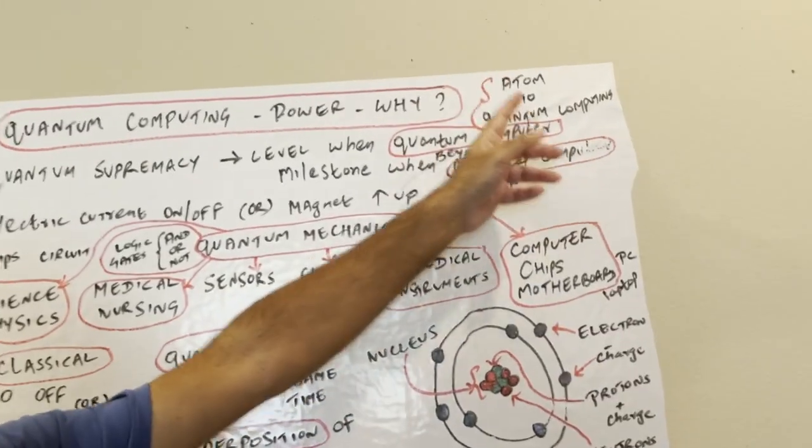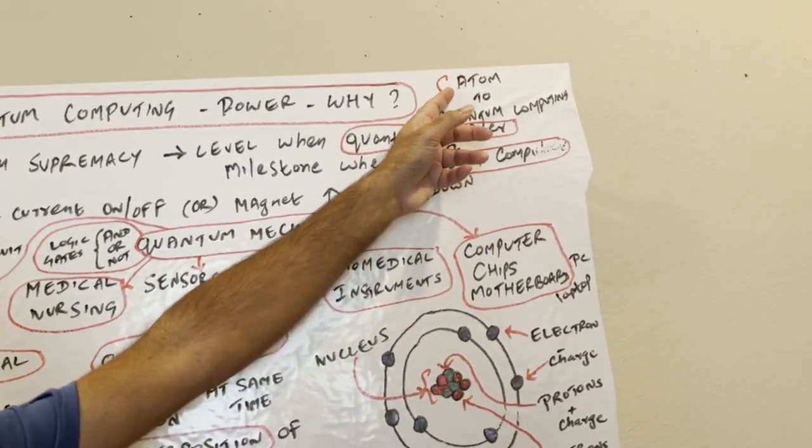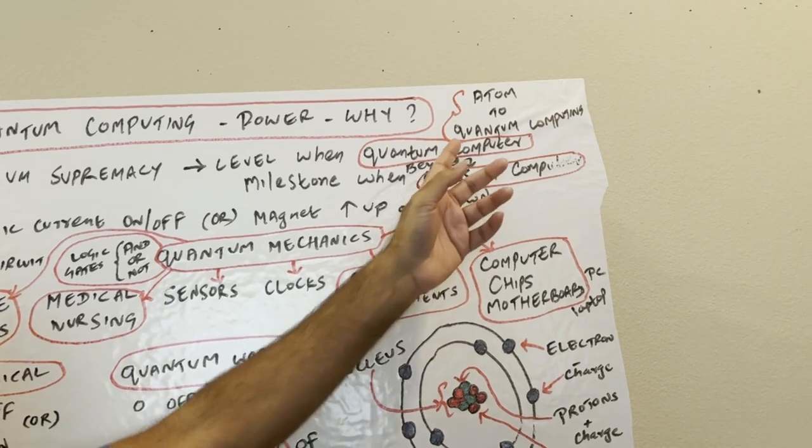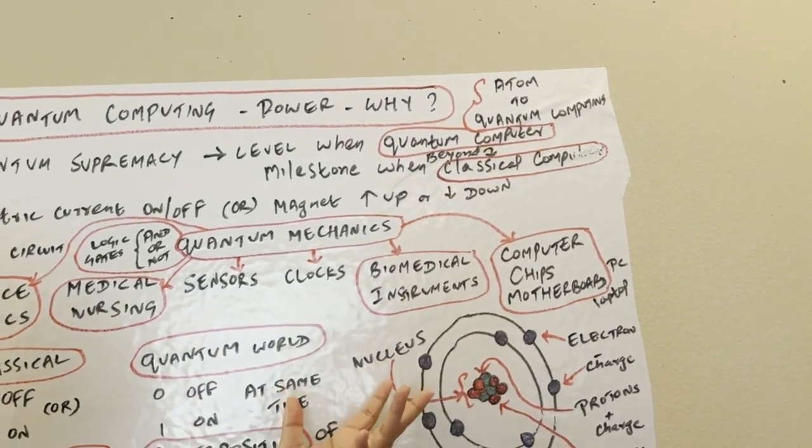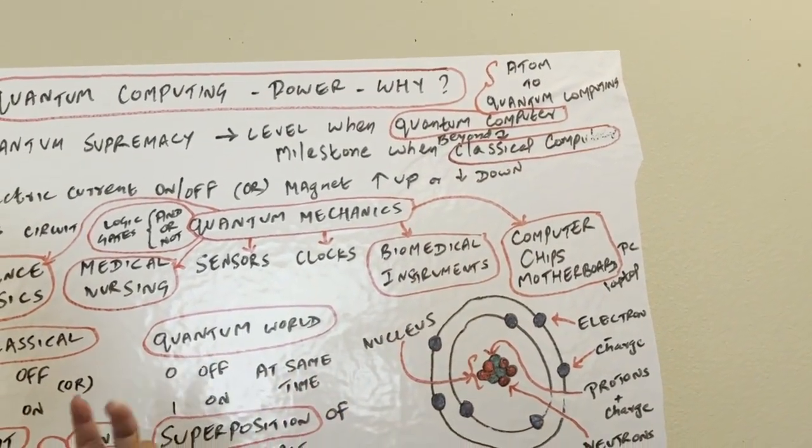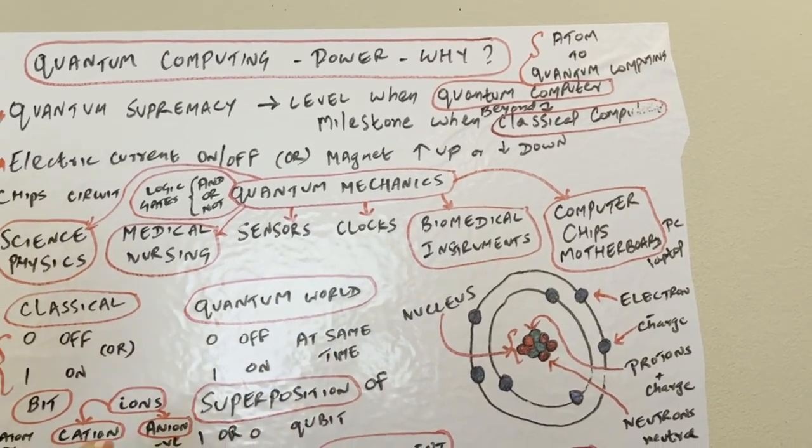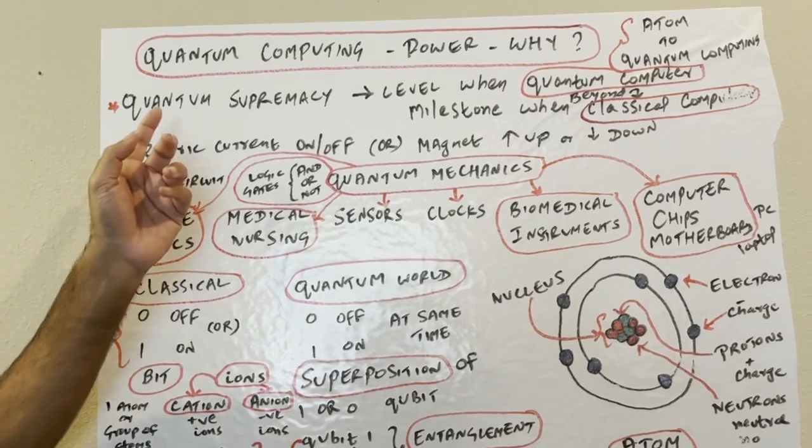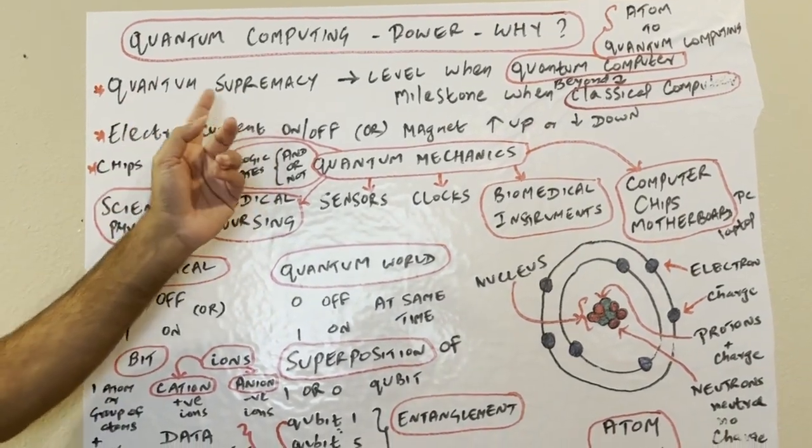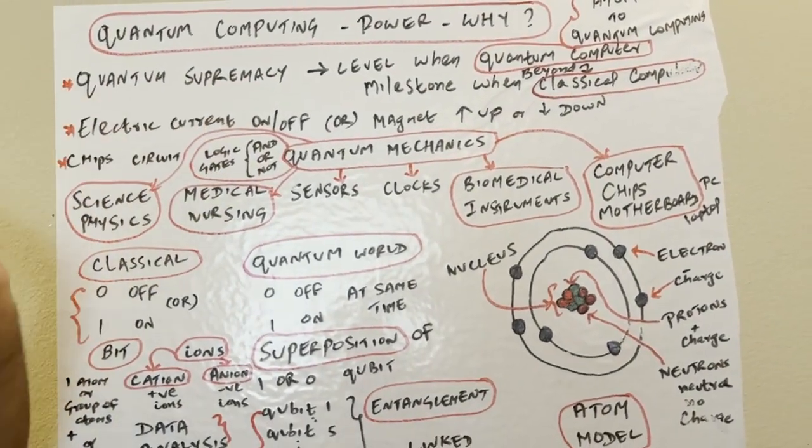Let's jump into that. So we have the quantum computers now. It all started with the atom in the universe. I'm going to try to link from atom how we came to quantum computing. You need to understand what is an atom, so I am going to give a brief explanation so you can understand the quantum computers better.